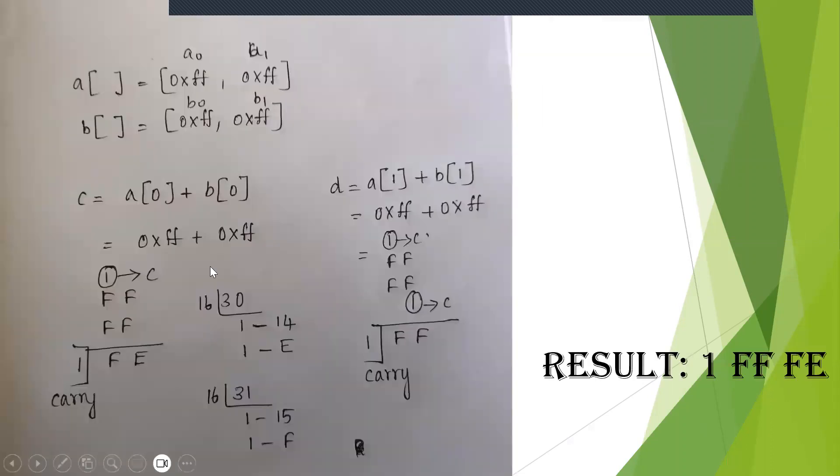So now a[1] and b[1] is nothing but 0xFF + 0xFF. So 0xFF, same procedure you will follow. Already you have a carry bit here, that carry bit will be added here. So 0xFF, 30 + 1 = 31. So 31 is nothing but 1F. F is stored here, 1 is taken as a carry bit. Again it is 31, so 31 means 1FF1. So you have again 1 as a carry.